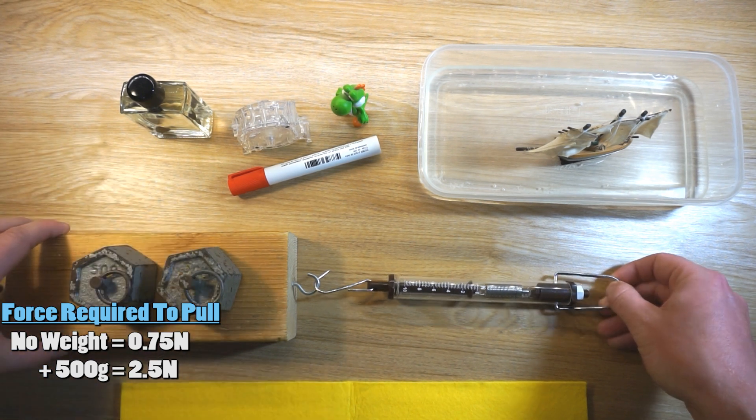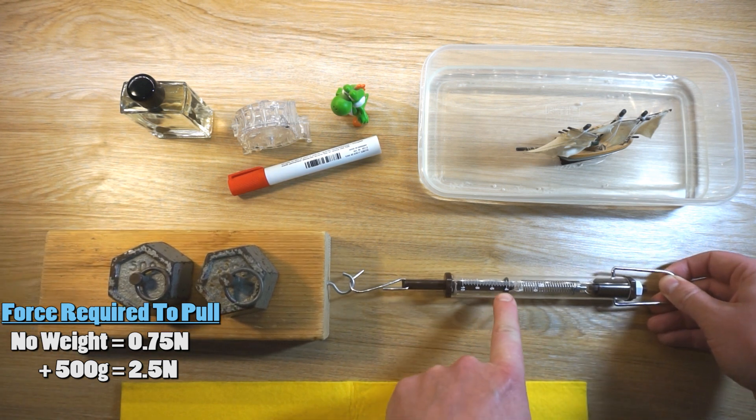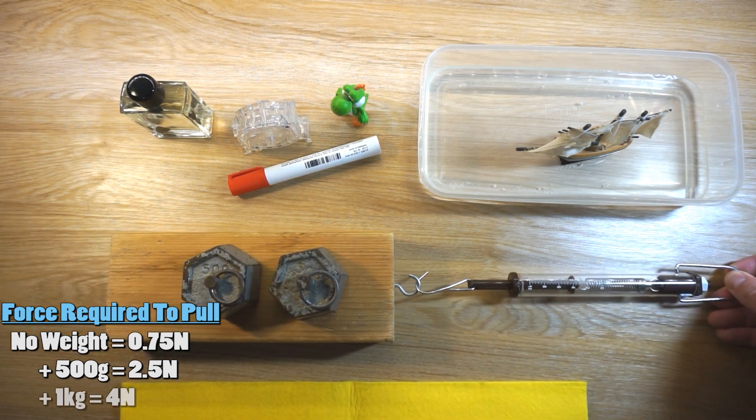The next step is to add another 500 gram weight, and when we pull that along, we can now see that it takes 4 newtons of force to pull the block of wood.